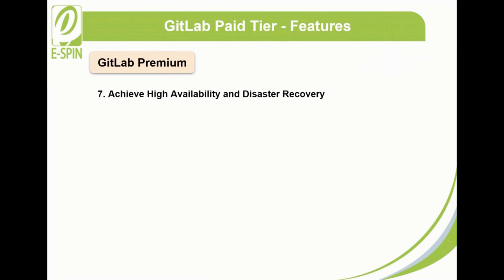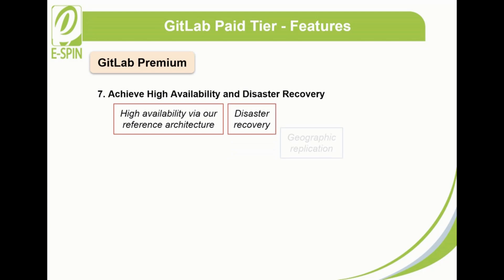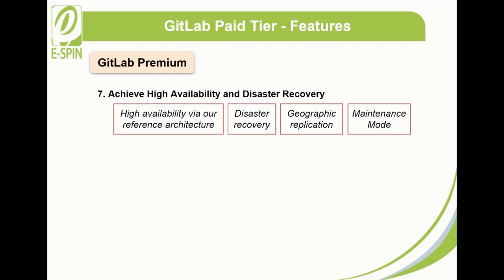7. Achieve high availability and disaster recovery. GitLab Premium's geographic replication and HA-DR solutions make reliability and performance of your DevOps service achievable. High availability via reference architectures avoids downtime and outages, ensuring developers are able to work at all times. Disaster recovery enables failover to another data center within minutes. Geographic replication reduces latency between distributed teams and increases developer productivity with globally distributed cloning and container registry geographic replication. Maintenance mode allows systems administrators to offer the highest level of access to their users while maintenance operations are in progress, with minimal disruption.